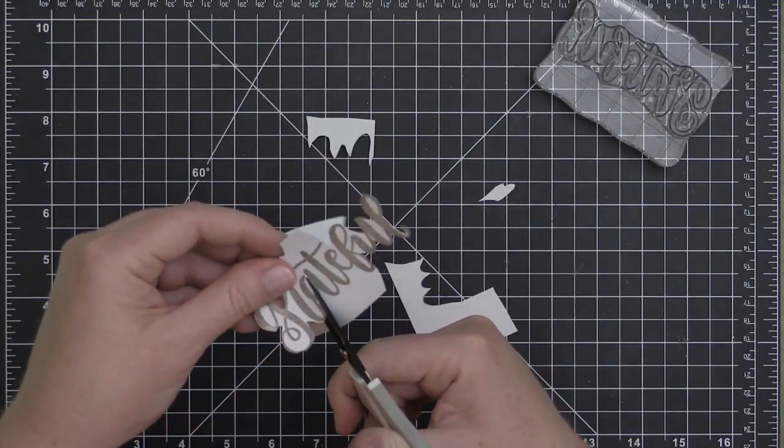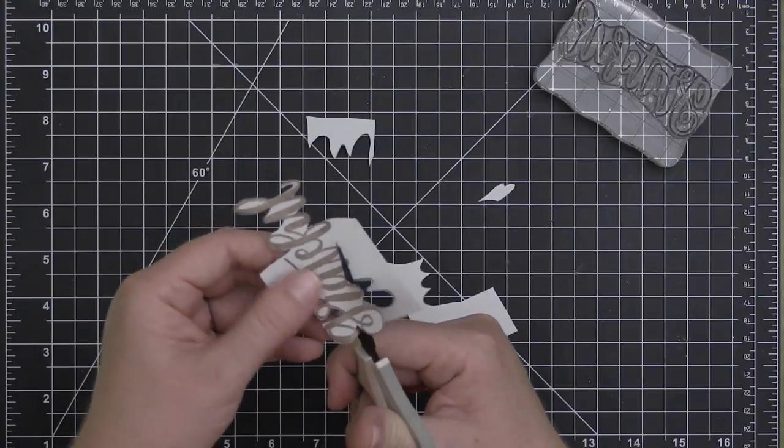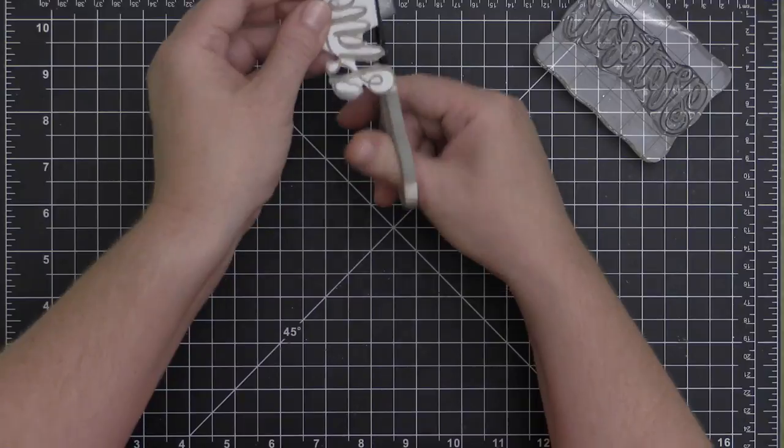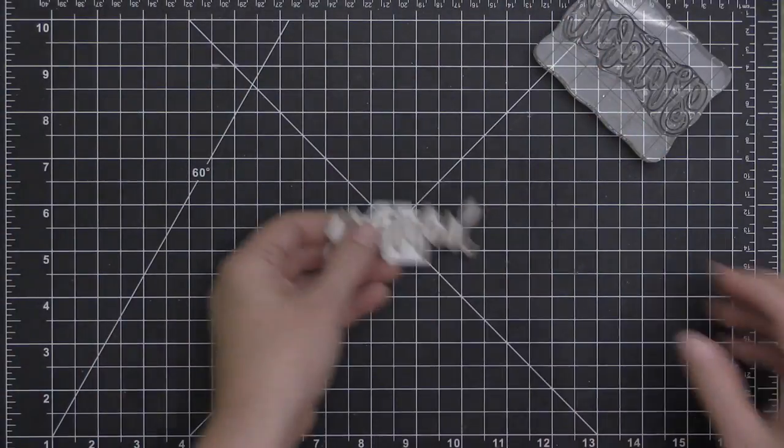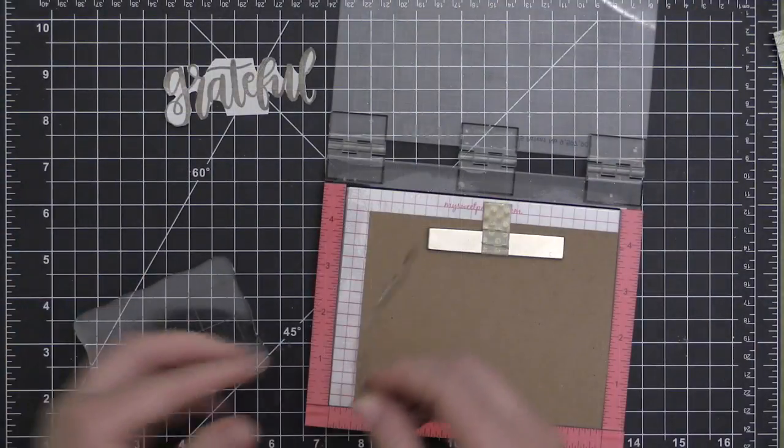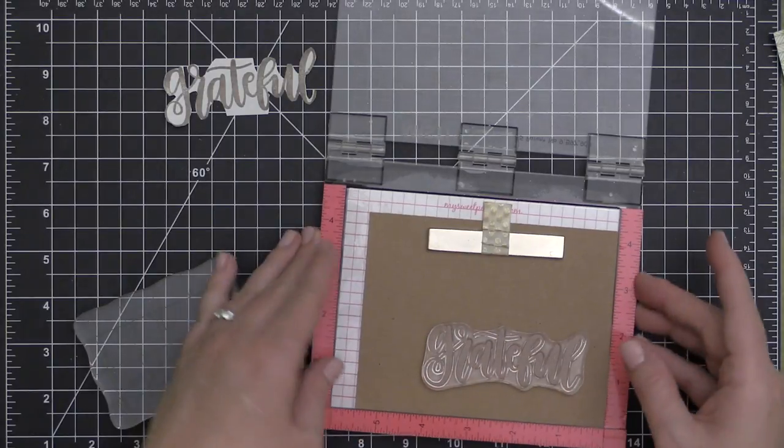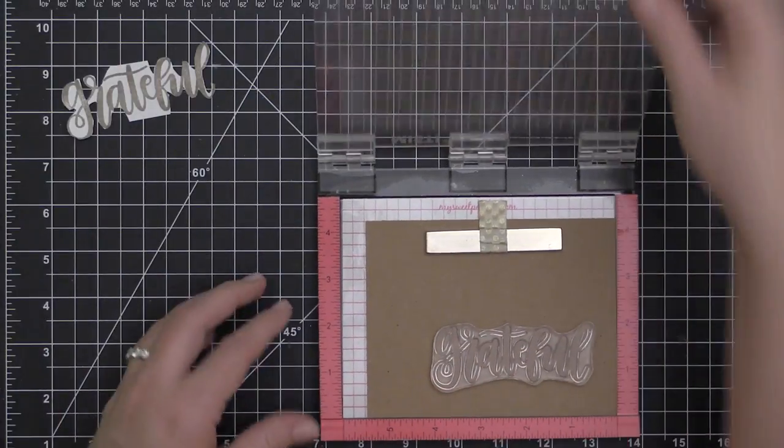By fussy cutting the mask, the stamped images will butt up right next to the sentiment that we're stamping onto our card front. If you don't have stamp masking paper, you can always use Post-it notes. I just found that mine weren't quite big enough, or you can use some typing paper and put some temporary adhesive along the back of that.